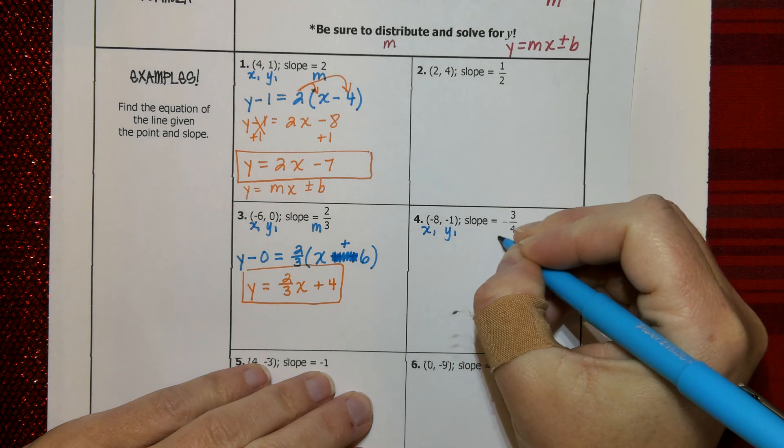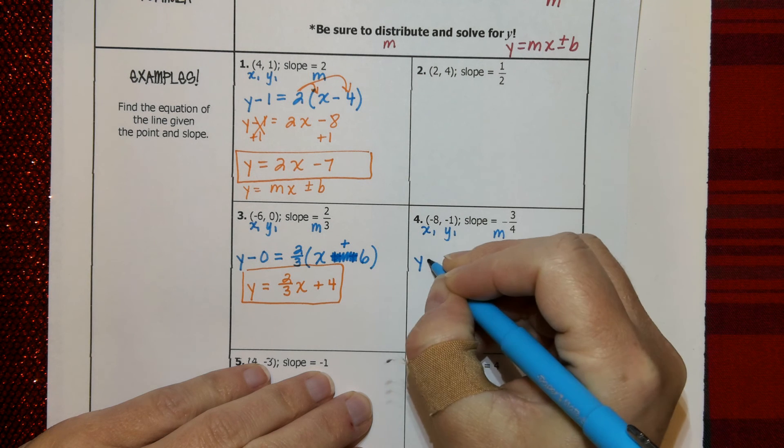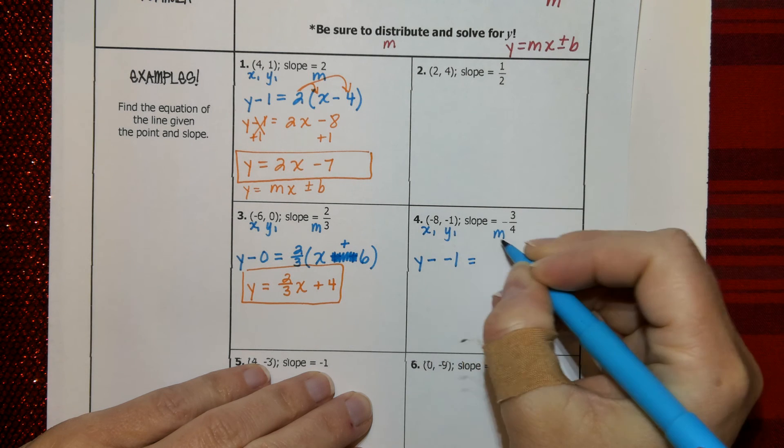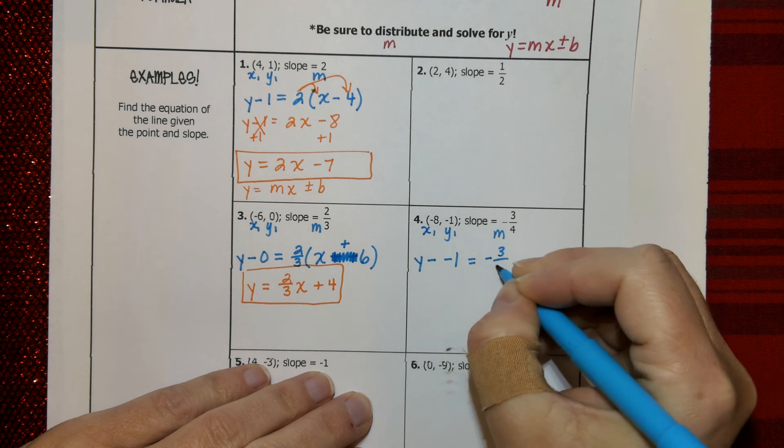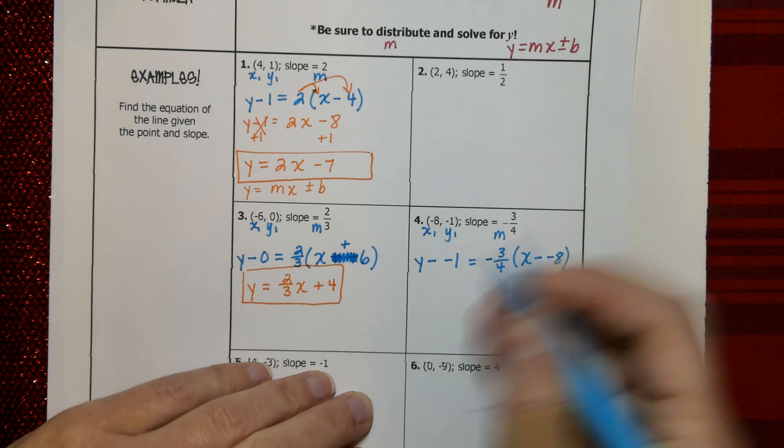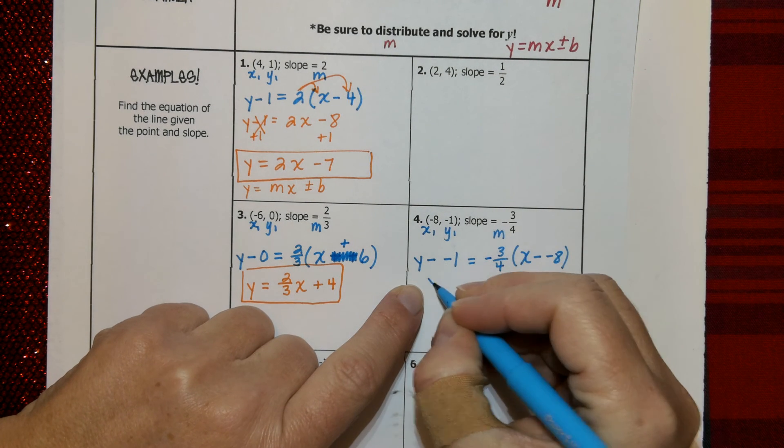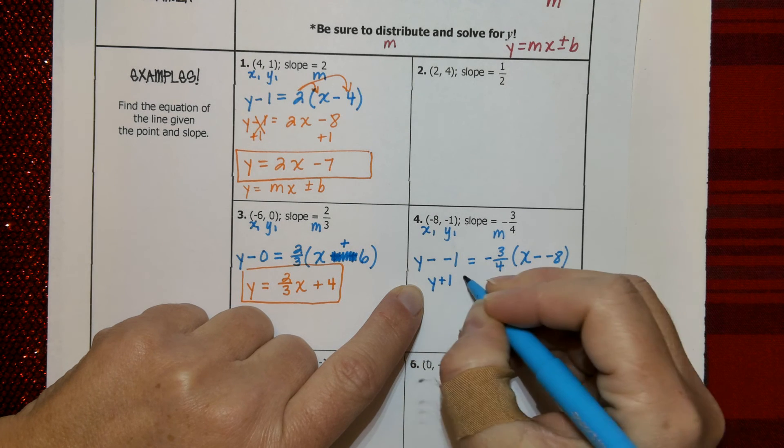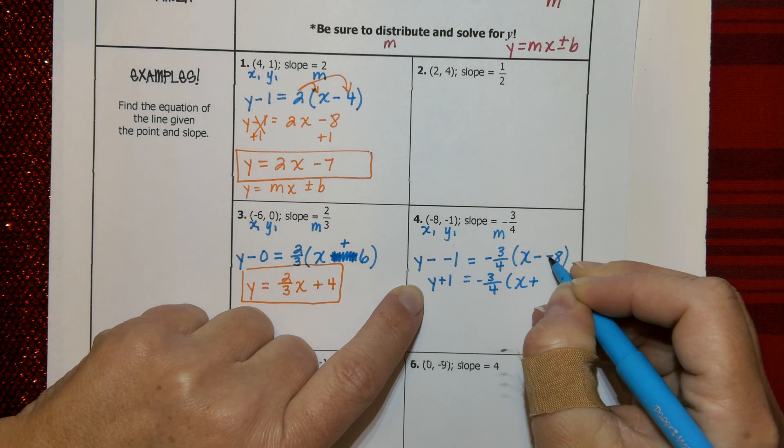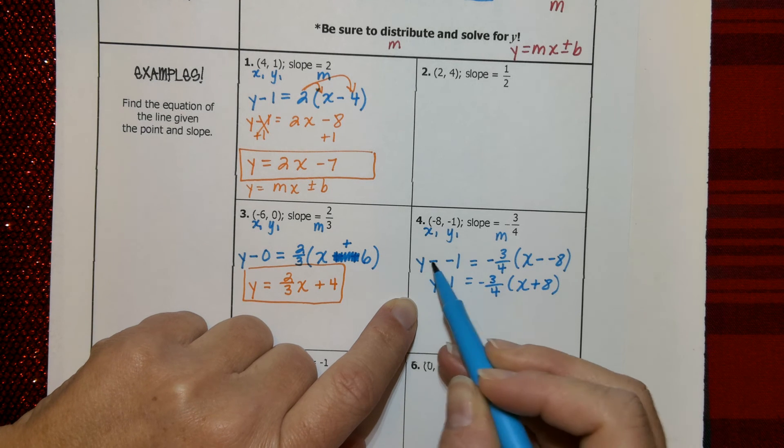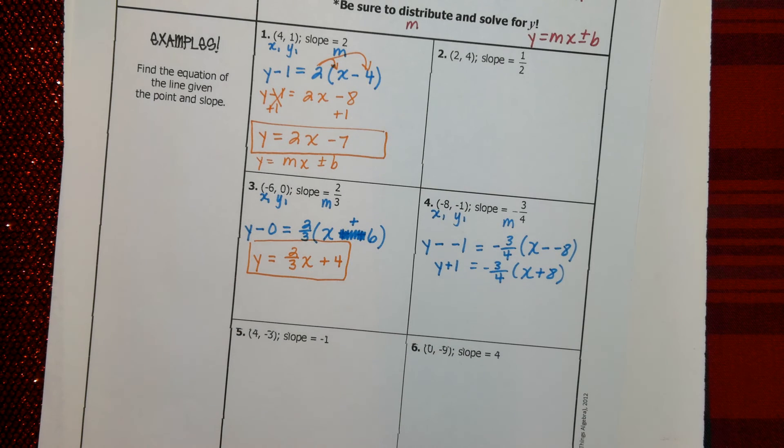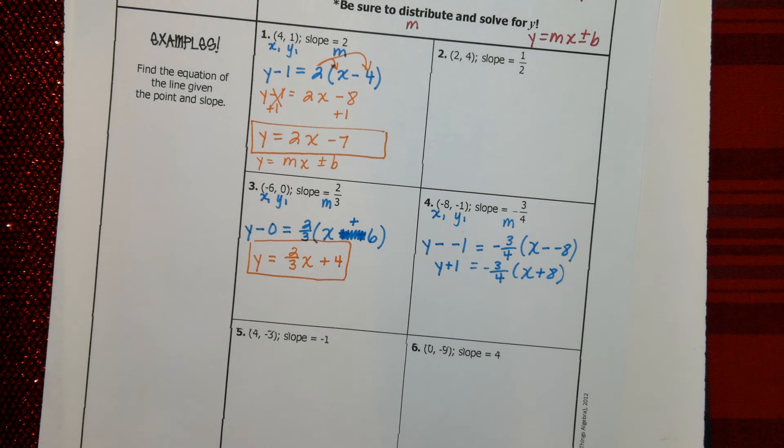Let's do number 4. I like number 4 because notice it has two negatives in the ordered pair. That's good. That's good practice. So we have an X1, a Y1, and our slope is also negative 3 fourths. So, Y minus Y1, which is negative 1, equals our slope, which is negative 3 fourths, parentheses, X minus X1, which is negative 8. So, here we go again. Look, you guys, taking away a negative is really adding a positive. So I'm going to go through and fix those right now because it happens again here. Taking away negative 8 is the same as just adding positive 8. So, minus a negative becomes addition.